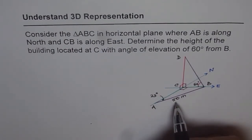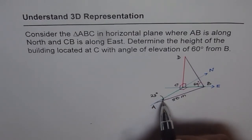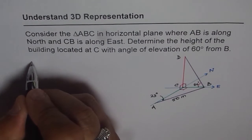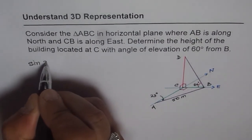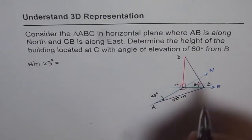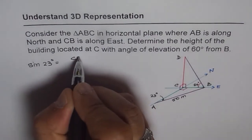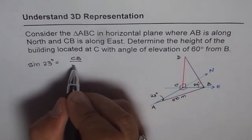CB is to be found, and what is known to us is the hypotenuse, 50 meters, and the angle 23. So CB is opposite side, so we should use sine. So sine of 23 degrees should be equal to CB over hypotenuse, 50.